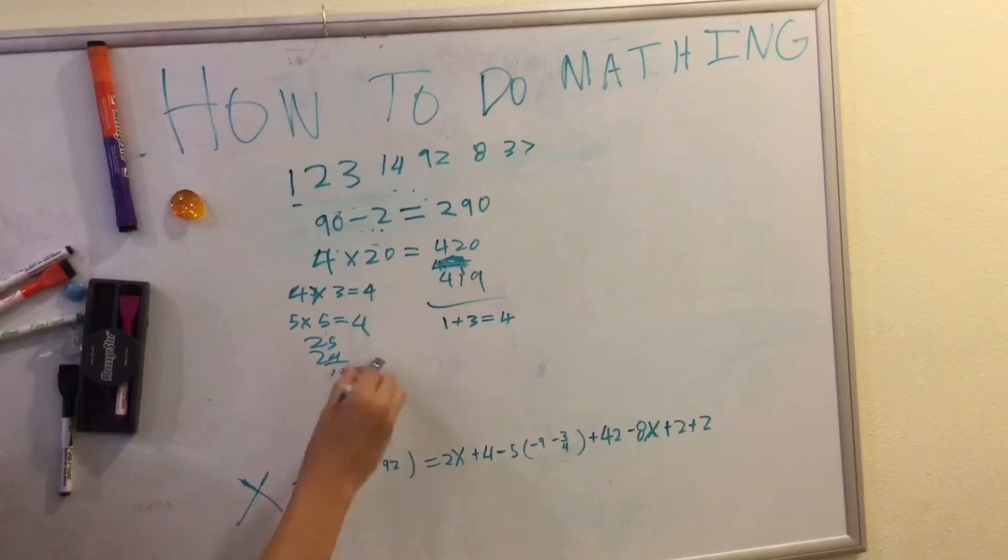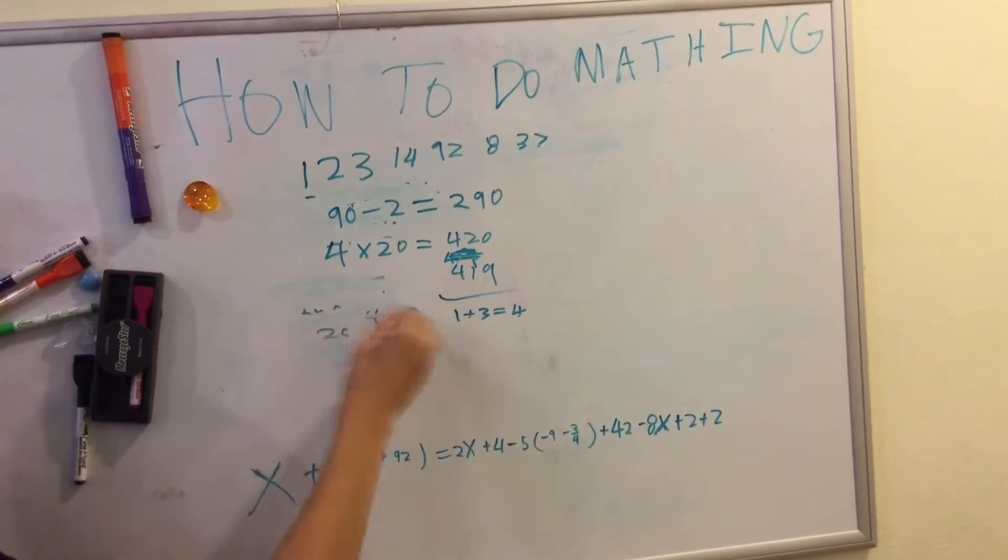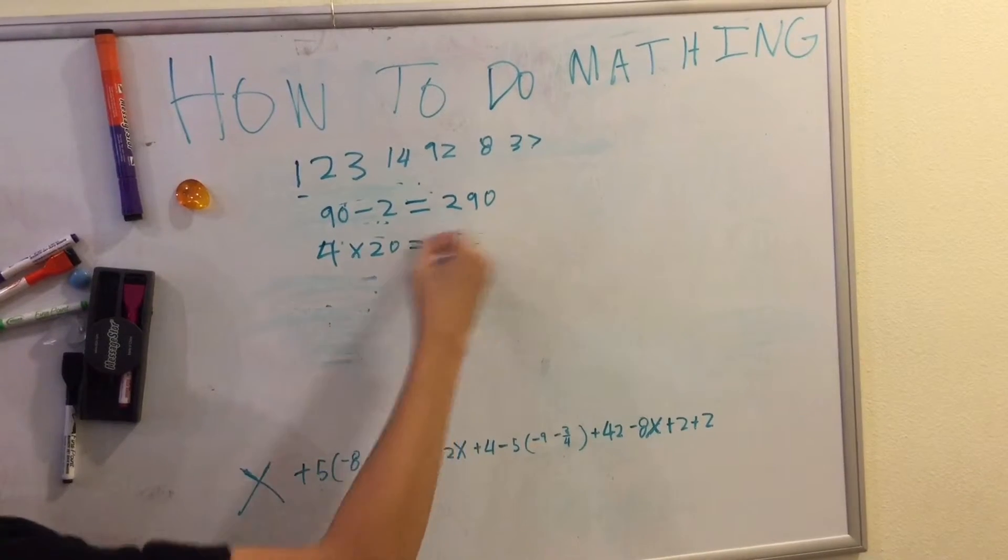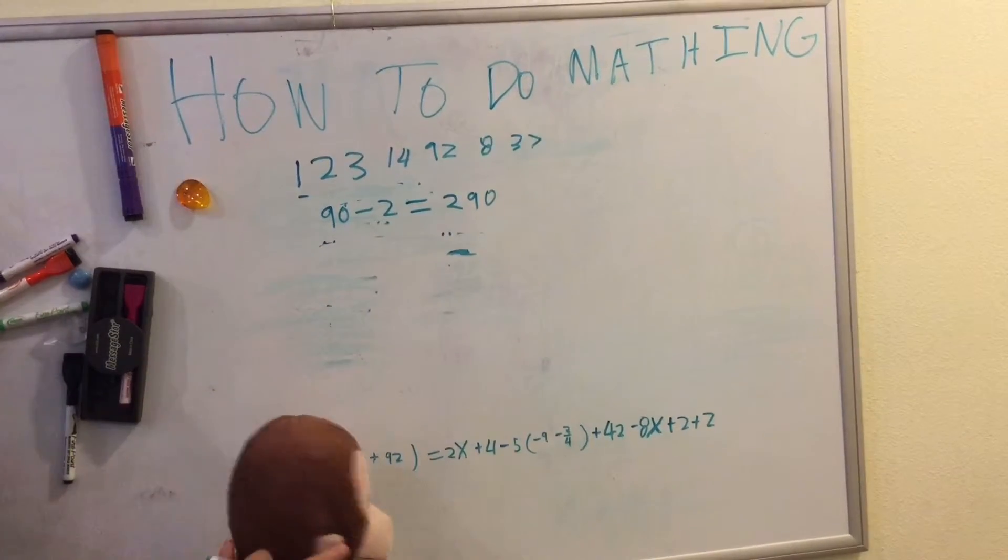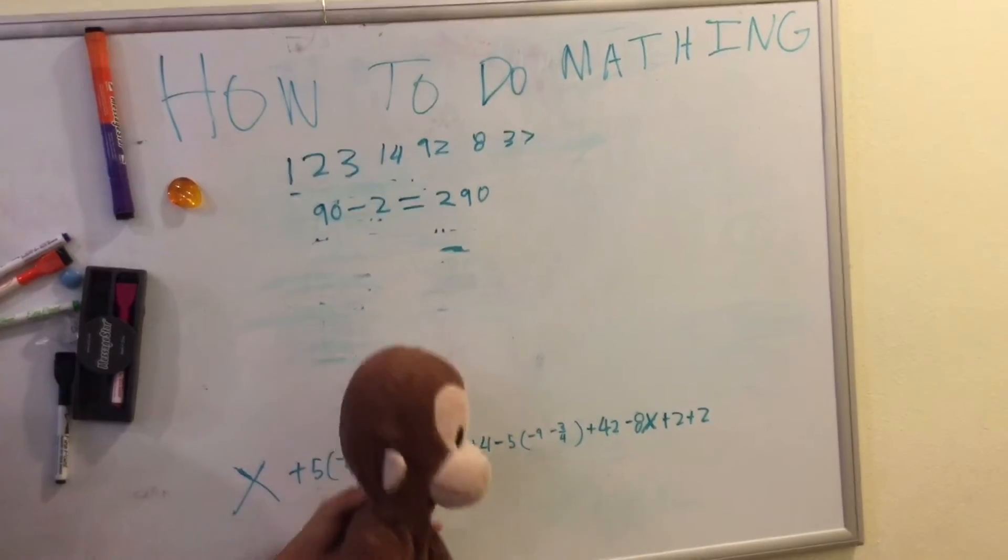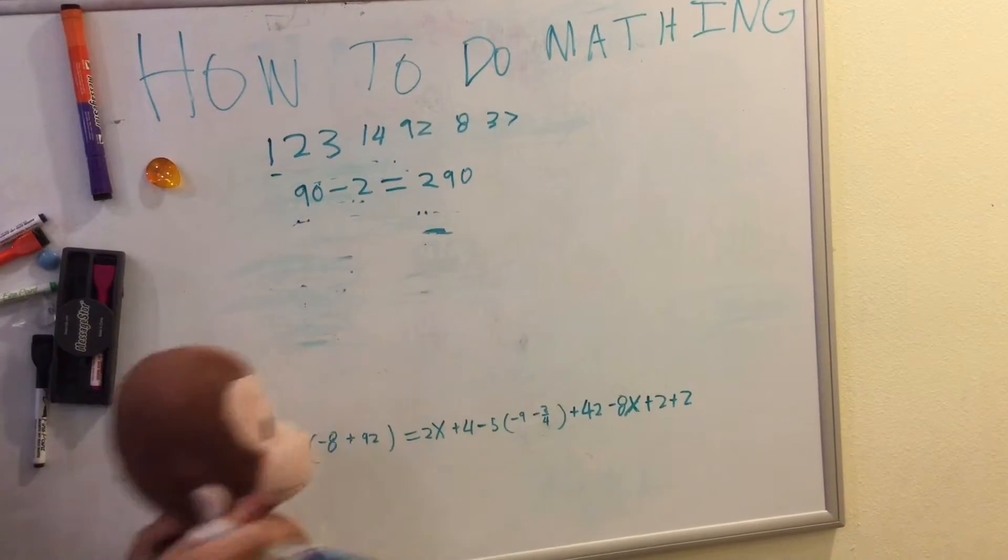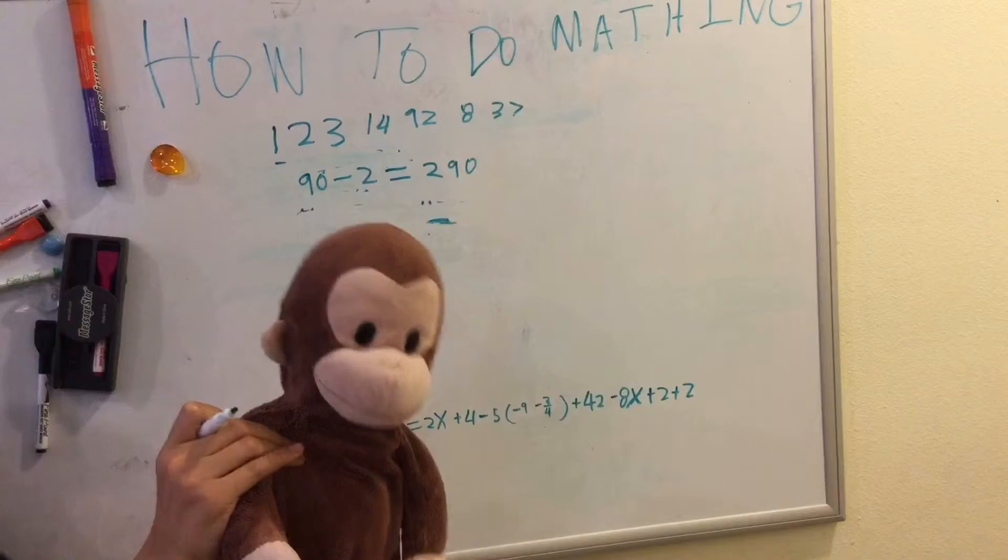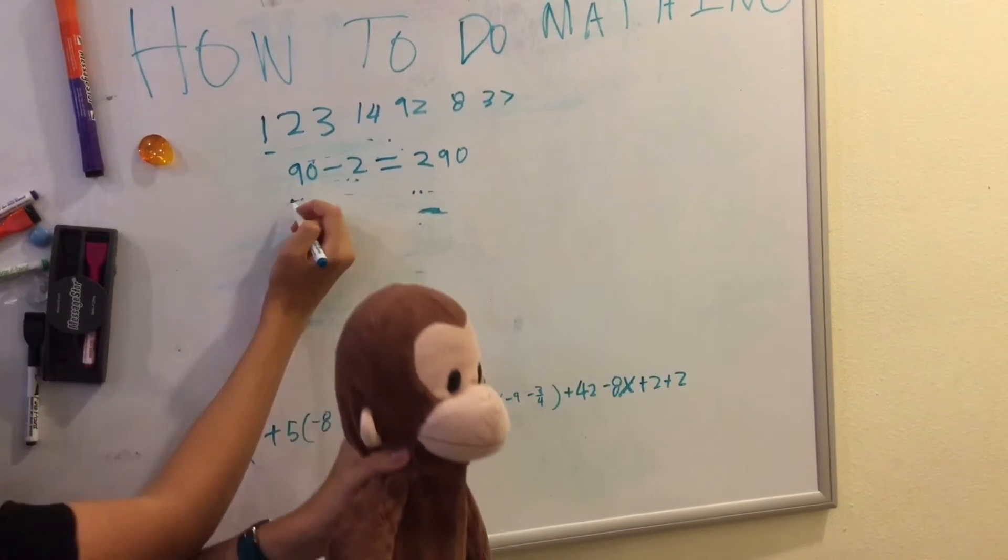Because let Brandy talk about division, which is one of the final things we'll be doing before we learn Algae bro. Brandy likes to say alligator bro because it's easier. Okay. Division.